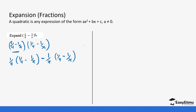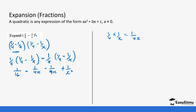Let's do this slowly. So 1/4 times 1/4 gives us 1/16. Then 1/4 times 1/x — we multiply the denominators and the numerators — which gives us 1/4x. Then minus 1/x times 1/4. Finally, minus 1/x times minus 1/x, which gives us a positive 1/x² since there are two x's. Be careful with the minuses.